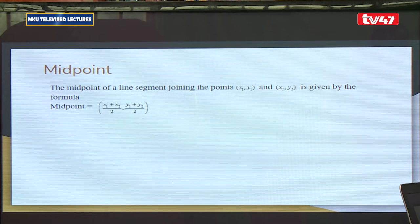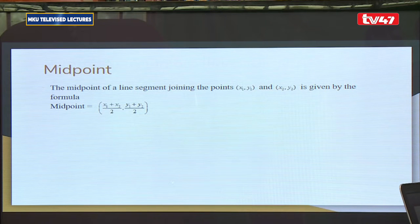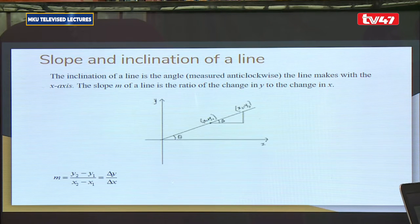For the midpoint, we simply take the corresponding coordinates for both points and divide by 2: x = (x1 plus x2)/2, and y = (y1 plus y2)/2.